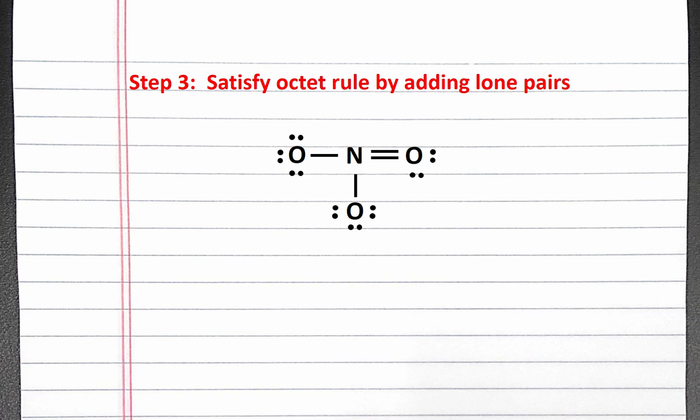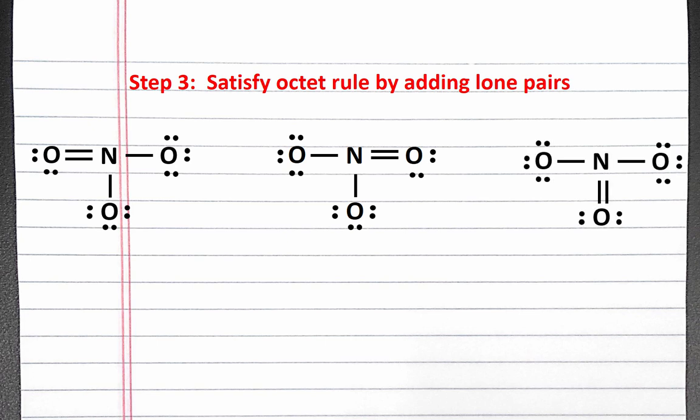However, instead of creating the double bond with the oxygen on the right, we could have created the double bond with the oxygen on the left, or with the oxygen on the bottom. These are three resonant structures for nitrate, because they differ only by the distribution of electrons. The actual nitrate ion does not have one double bond and two single bonds. Rather, it has three identical bonds somewhere between a single and a double bond. The actual polyatomic ion is an average of these three resonant structures.